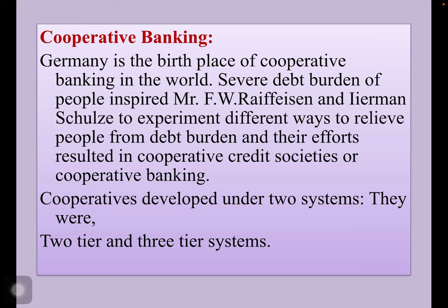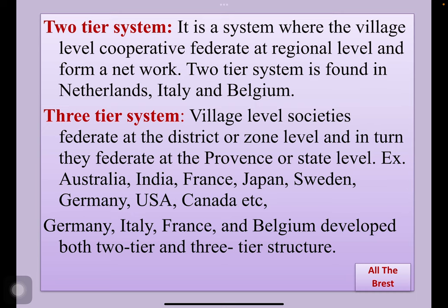Cooperative banking developed under two systems: the two-tier system and the three-tier system. The two-tier system is a system where village-level or local-level cooperatives federate at the regional level and form a network. In India, land development banks were developed under the two-tier system.